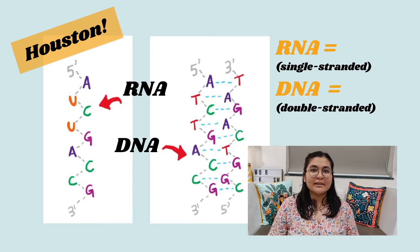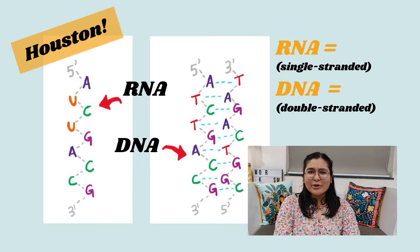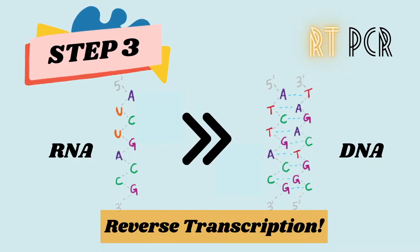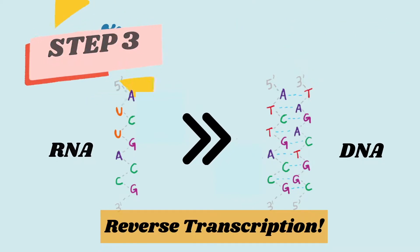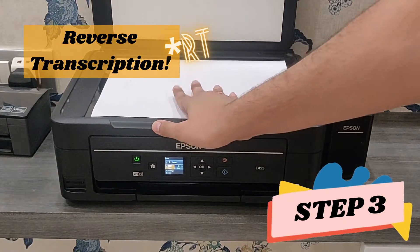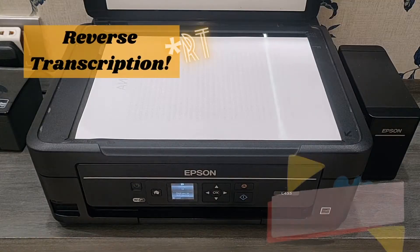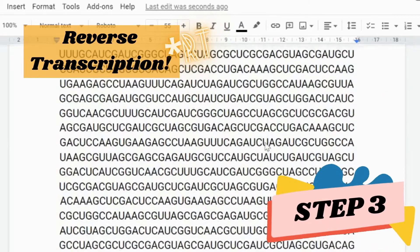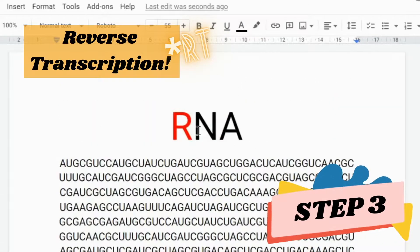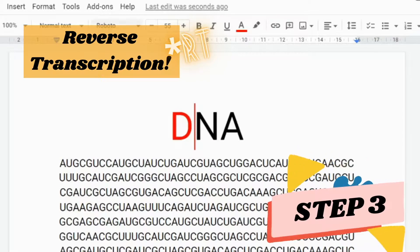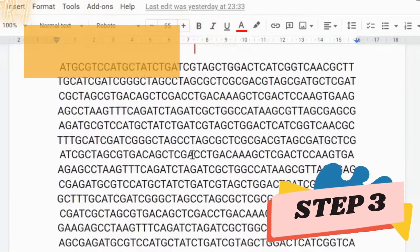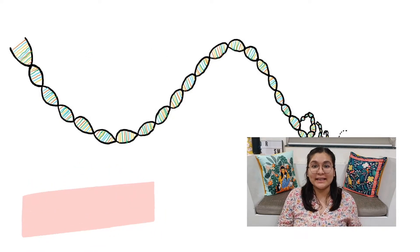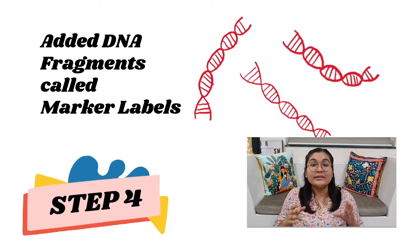This is where we hit a problem: the PCR process uses DNA, but our sample contains RNA. So how do we fix this? With step three — reverse transcription — the conversion of RNA into DNA. Think of it like using a scanner for a school project: we take a single copy of the sample RNA and convert it into DNA form, like scanning a physical document and editing it on your computer.